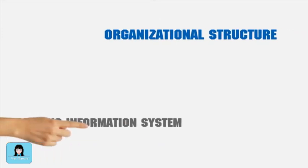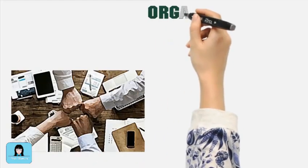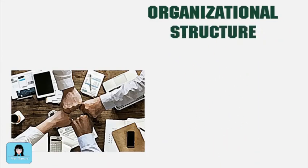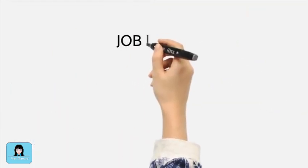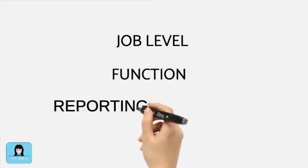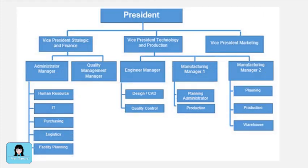In this video, we will examine the relevance of organizational structure to the accounting information system. Organizational structure is a system used to define a hierarchy within an organization. It identifies each job level, the function of each job level, and where it reports to within the organization. This structure is illustrated using an organizational chart and is developed to establish how an organization operates and assists an organization in obtaining its goals to allow for future growth.